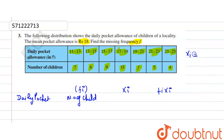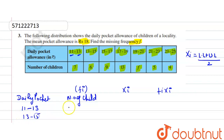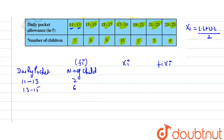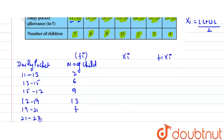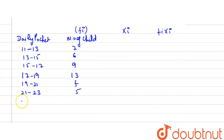We find xi from the lower and upper limits of the interval — for example, 11 plus 13 divided by 2. That is how we find xi: it is the midpoint of each interval. So xi equals the sum of the lower and upper limit divided by 2.